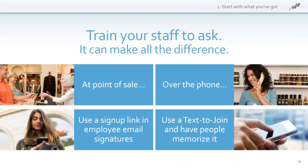Train your staff — it makes all the difference. At the point of sale, at the cash register, there's a very high percentage of people that will join your email list if you simply ask them. Over the phone taking a phone order is also a great time to ask. Use a sign-up link in your employee email signatures — you can set that up easily in Gmail or Yahoo Mail, saying 'Join my email list, click here.' You can even make a little button. And use the text-to-join app — have people memorize that keyword.